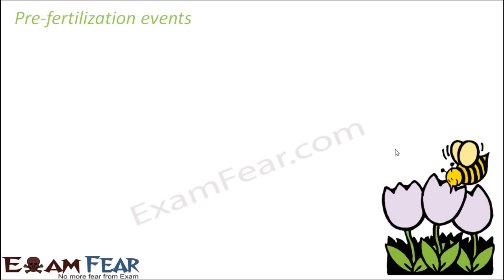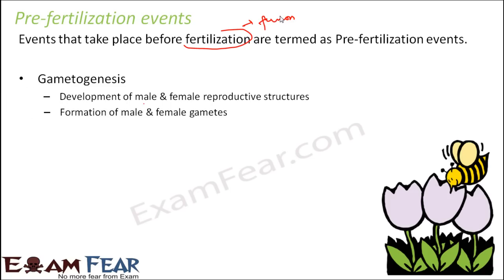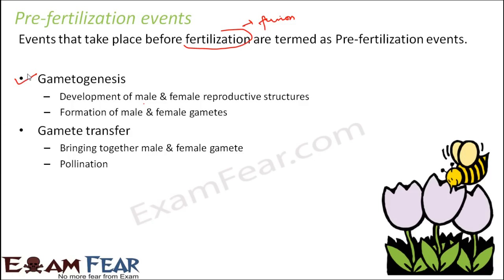So what are the events that occur in the pre-fertilization phase — the events that take place before fertilization? Fertilization is the fusion between the male and female gametes. Before that fusion takes place, some preparations occur. The first is gametogenesis, that is, the formation of gametes — the male gamete and the female gamete both have to form before they can fuse.